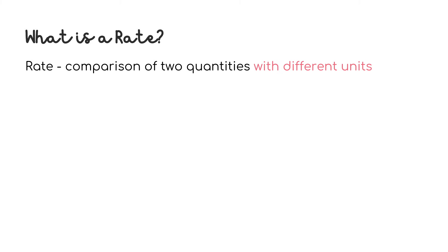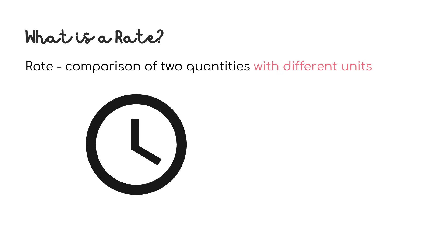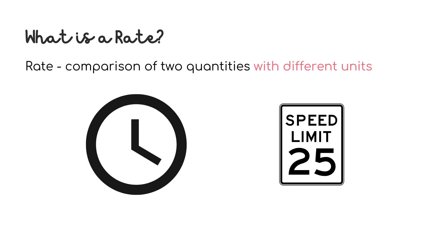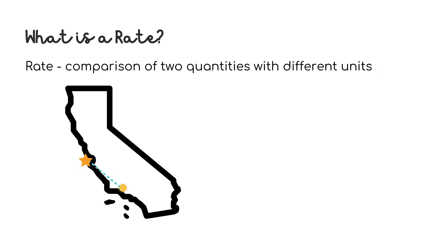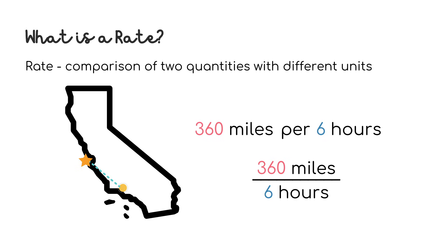In the real world, you'll often see rates as it relates to time. For example, you'll hear about miles per hour or kilometers per hour if you're outside of the United States. Let's look at if you're on a road trip from Los Angeles, California to San Francisco, California. The distance between these two cities is 360 miles, and it'll take you about 6 hours without traffic to get there. So the rate you'll be going is 360 miles per 6 hours. Whenever you hear the word 'per,' this means division. So you can actually write this rate as a fraction where the miles goes on top and the hours go on the bottom. We'll talk about unit rates a little later, and that's where we try to make the number on the bottom equal 1.